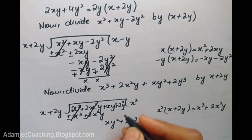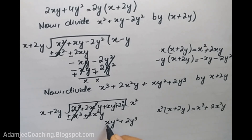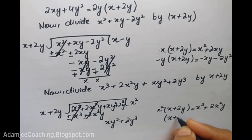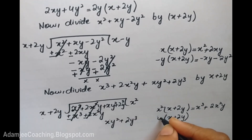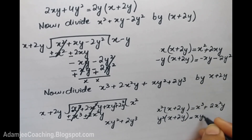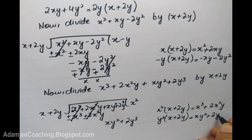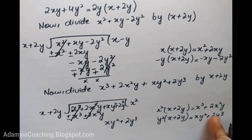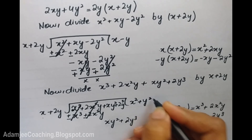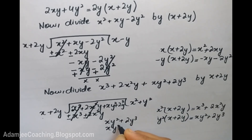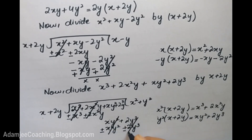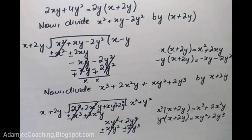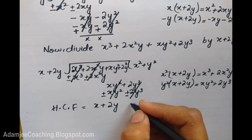After this step, we have xy² + 2y³ remaining. Here x + 2y times y² gives xy² + 2y³. Changing the sign to plus then minus, it cancels completely. We can see that the HCF is x + 2y. What we have done is divide all the polynomials step by step. The last non-zero divisor, which is x + 2y, is our HCF.